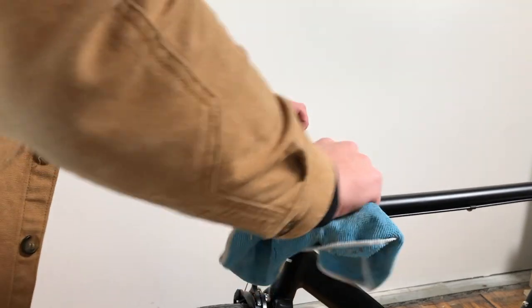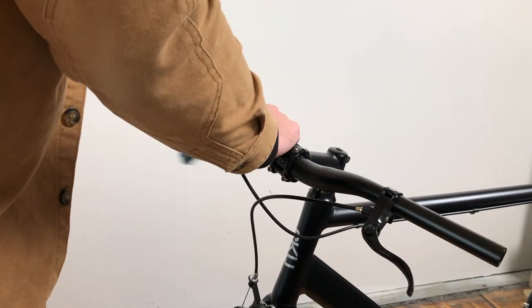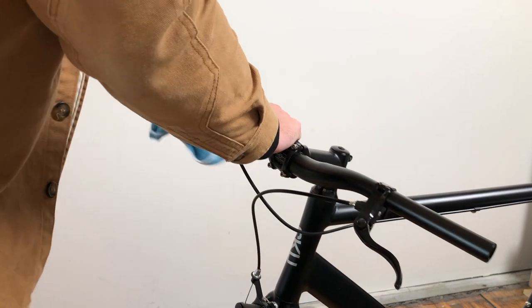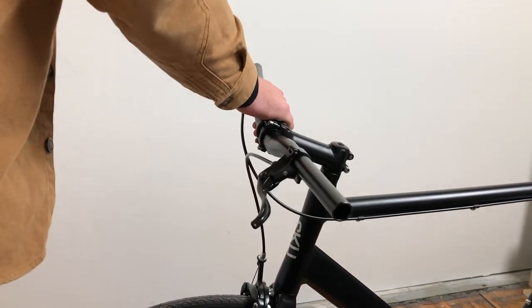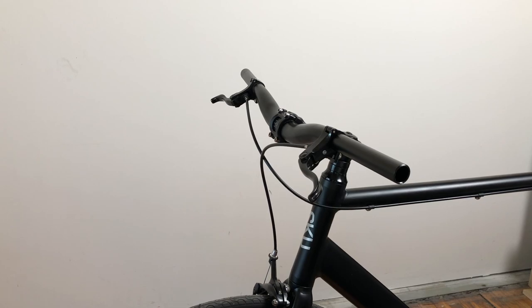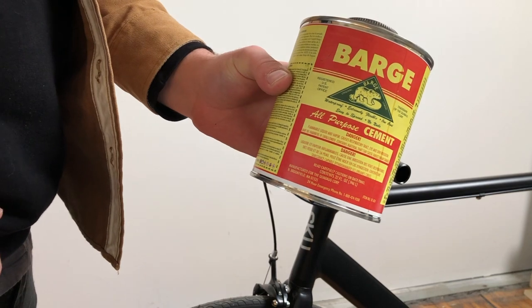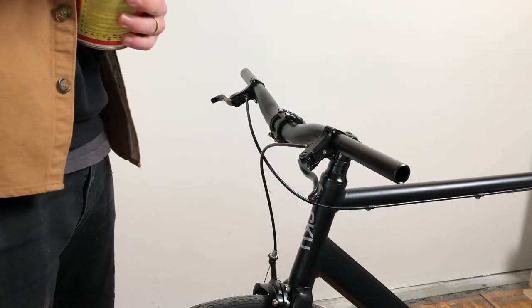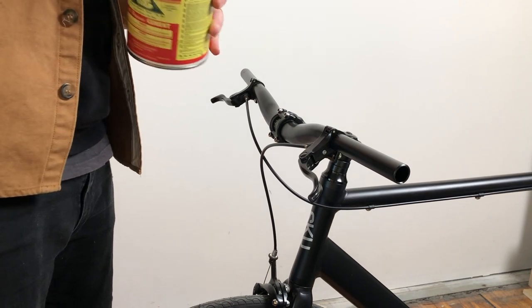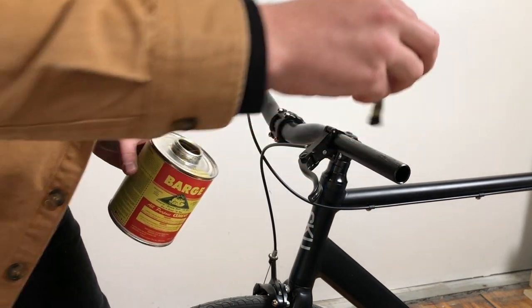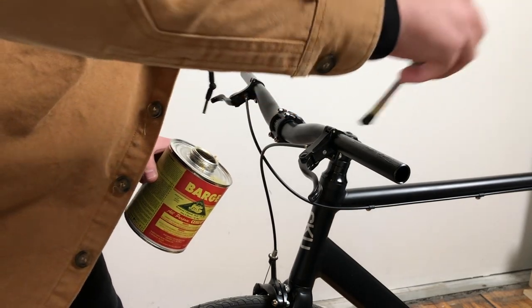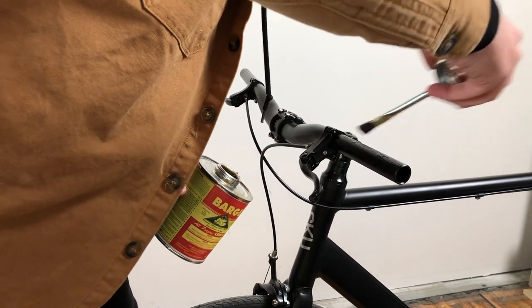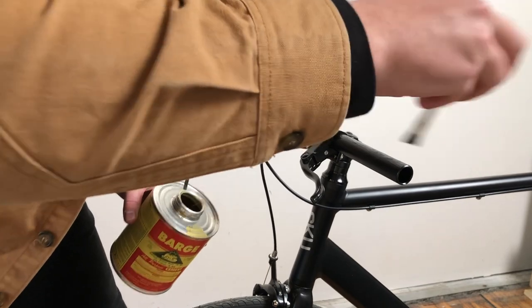Okay, so now we're gonna wipe off the handlebars so there's no grease or anything remaining on them from the old grips. And what I'm gonna do now is add some rubber cement, some barge, to the handlebars. Not a ton, but just enough to kind of grab onto it. You don't even need to go all the way around, just kind of lightly get it on there.